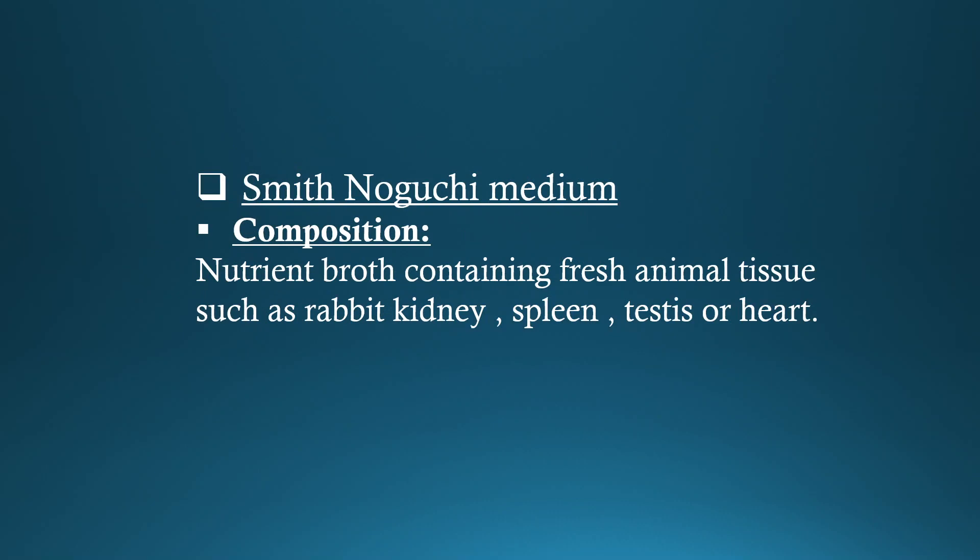Smith Noguchi medium. Composition: nutrient broth containing fresh animal tissue such as rabbit kidney, spleen, testis, or heart.